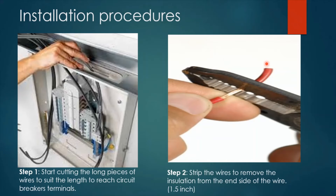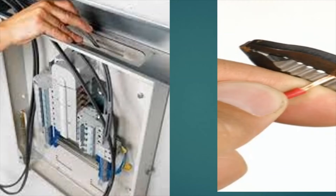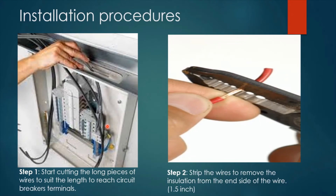Now let's look at the installation procedures of wire termination and dressing. Step one is to start cutting the long pieces of wires to suit the length needed to reach the circuit breaker terminals. As you can see, the wires are cut to a specific length to exactly meet the terminal of the circuit breaker. Step two is to strip the wires to remove the insulation using the wire stripper. It is recommended to remove 1.5 inches or around 4 centimeters of insulation.